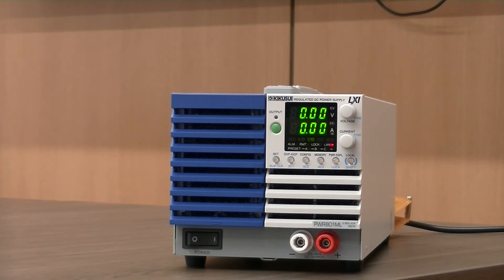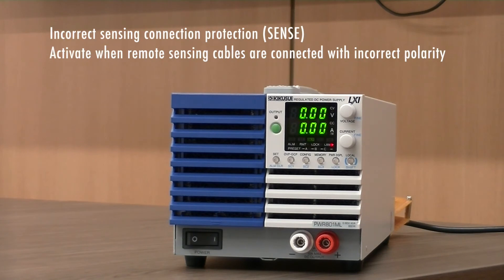The PWR01 also comes with sense protection, which is activated when the remote sensing cables are connected with incorrect polarity and the remote sensing function is used.